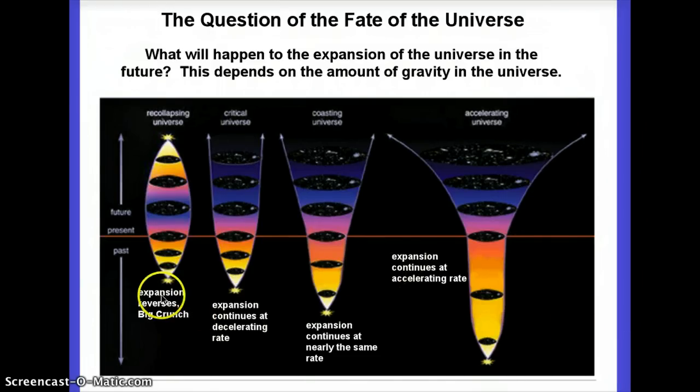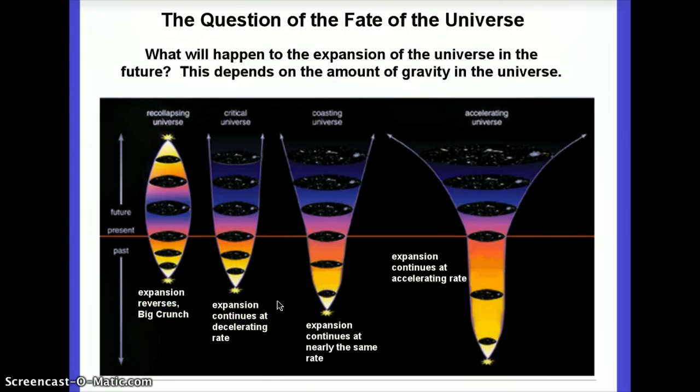If gravity is too big, then we will have gravity win and re-collapse the universe. If gravity is pretty strong but not that strong, you might slow down the expansion, but you can't actually stop it. If gravity is a little bit weaker yet, then we just keep going the way we're going. And if the expansion is really, really strong and gravity is really, really weak, we would accelerate.